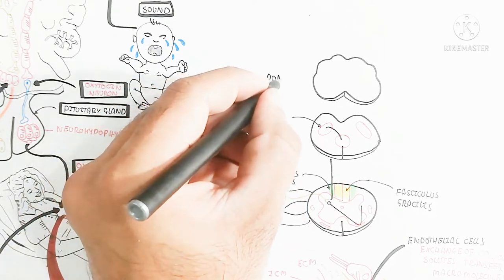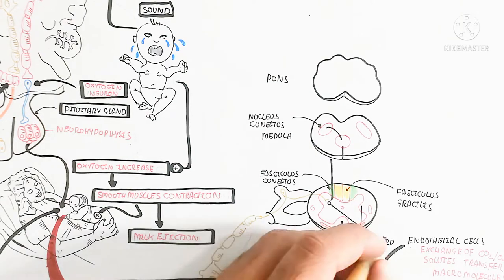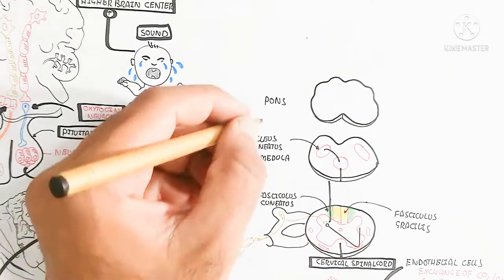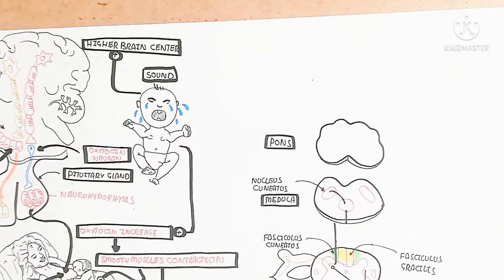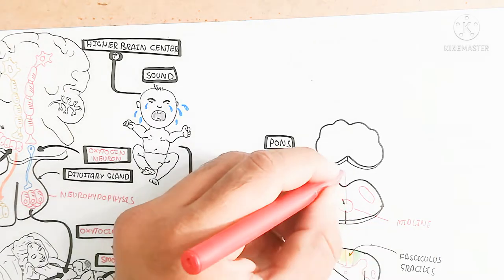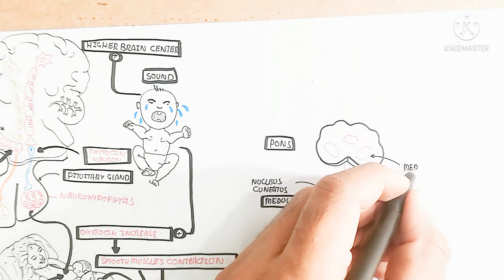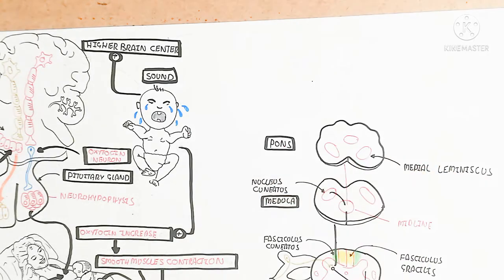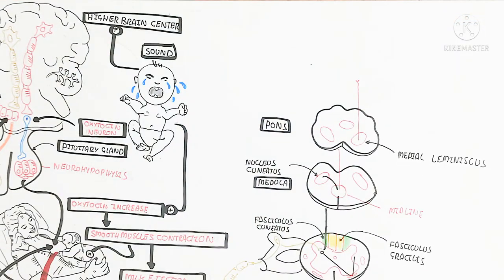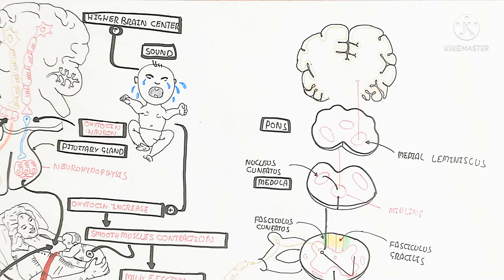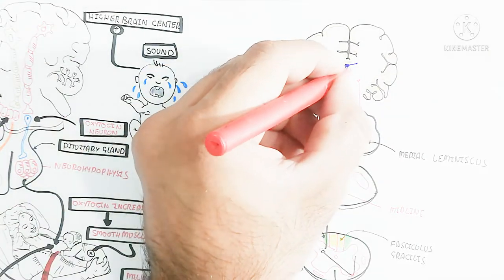After the midline of the medulla, the signal moves into the pons where the medial lemniscus nucleus is present — that is why this is known as the medial lemniscus pathway. It then leads to the ventral posterior lateral nucleus of the thalamus, which serves as the central relay part of the brain.